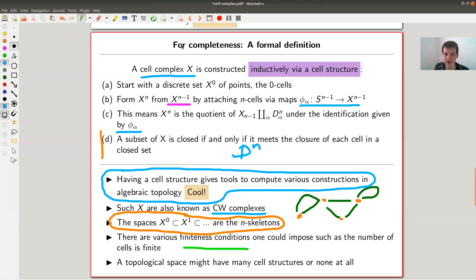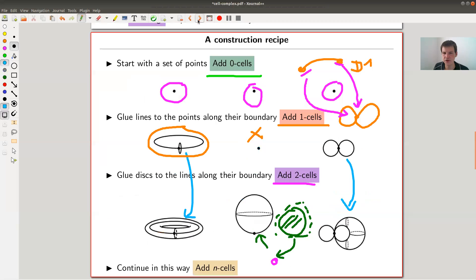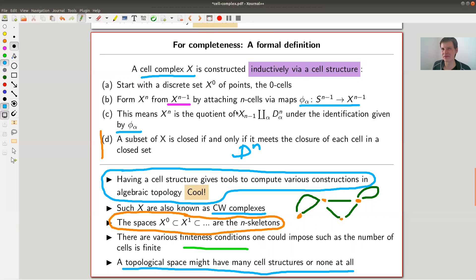Just a warning. There might be many different CW structures. I showed you two, they're not equivalent as cell structures, they have different cells, but they give you the same topological space. And that's in the end what we are interested in.